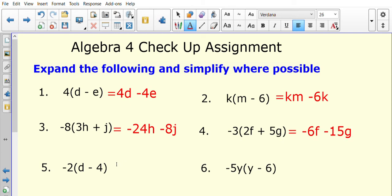Question number five. I have negative 2 times the bracket, so negative 2 times d would be negative 2d. And I've got negative 2 multiplied by negative 4, which is positive 8.